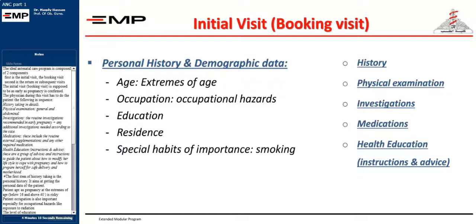The first item of history taking is the personal history. It aims at getting the personal data of the patient: patient age, as pregnancy at the extremes of age — below 16 and above 40 — is risky; patient occupation, especially for occupational hazards like exposure to radiation; the level of education; the patient's residence, especially if she lives in areas endemic in certain diseases like malaria in central and western Africa. We should also inquire about any special habits of health significance concerning pregnancy, like alcoholism or smoking, whether active or passive.